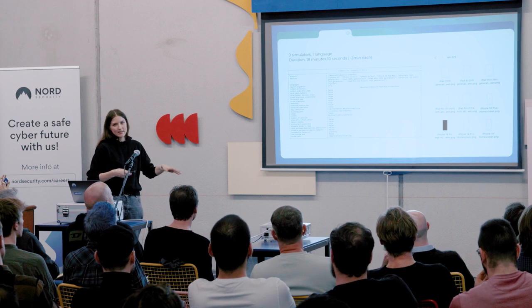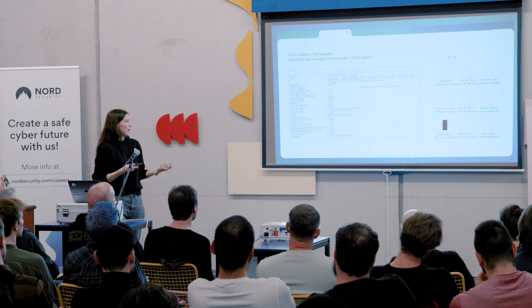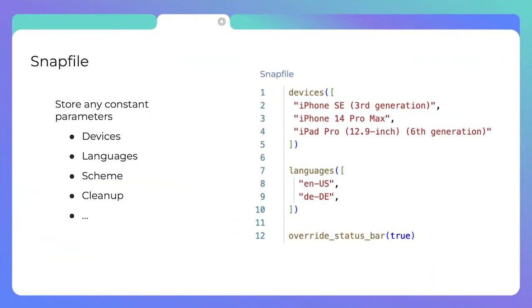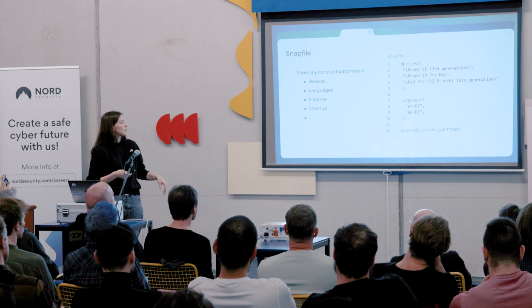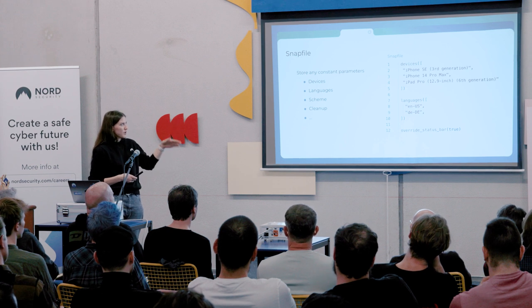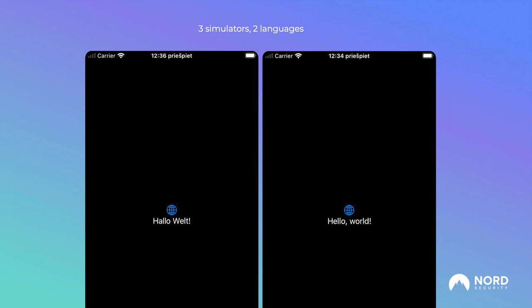Now that we've tried the basic setup, let's see how we can customize it. I want to change the devices I'm running on, see how localization works, and also see that pretty status bar — that's when we need the Snapfile. The Snapfile is where you put all reused parameters for snapshot execution. Here I specify three simulators, localize to German, pass the German language, and set override_status_bar to true. These two screenshots from iPhone SE show the localization working — we have 'hello world' on one side and the German equivalent on the other.